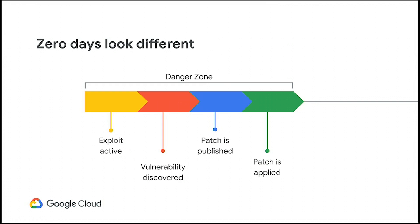The problem with zero days — and really any unknown vulnerability — is that the danger zone is much, much larger. There is an exploit active somewhere in the wild, maybe a remote code execution in your function or an insecure credential that you don't know about. Until you discover it, from T equals zero all the way up to the present, that's a very, very dangerous place.